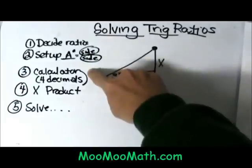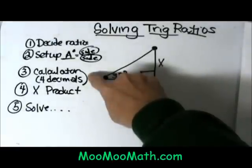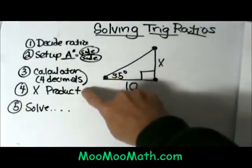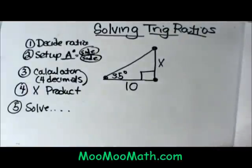Then you're going to need a calculator to find the value of the trig ratio to four decimal places. Then you're going to use a cross product, that means cross multiply, and then any steps to solve.